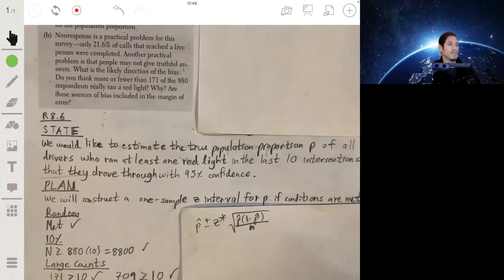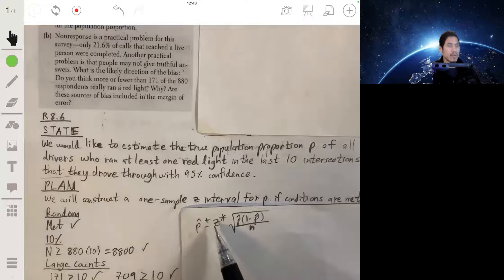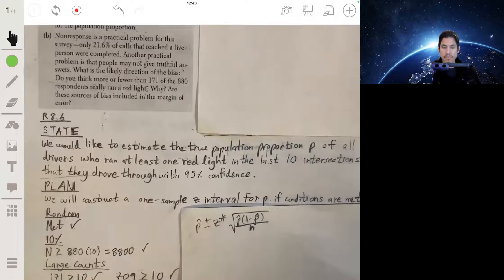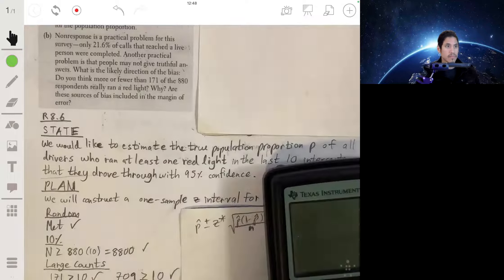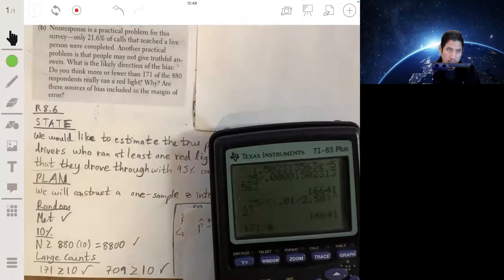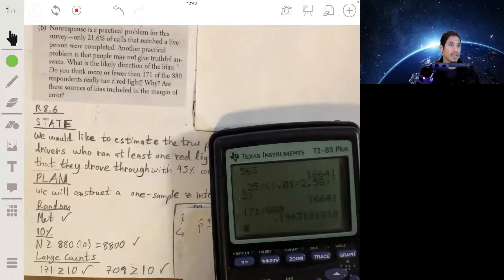Our p hat, that'll be 171 divided by 880, about 0.1943.